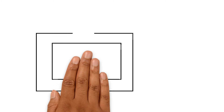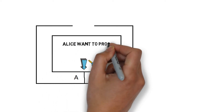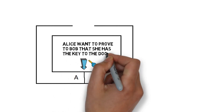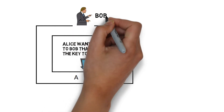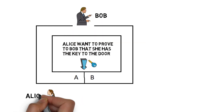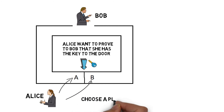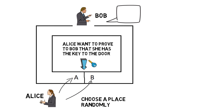The third example of ZKP is the well-known Alibaba cave. Location A and location B are in a cave and are separated by a door which can be opened via a key. If Alice wants to prove to Bob that she has the key to the door, what can she do to complete the proof without showing the key to Bob? A possible solution is that Alice can randomly choose to stand at location A or location B, and Bob does not know her location. Bob will randomly pick a side, either A or B, and ask Alice to walk out through that side of the cave.